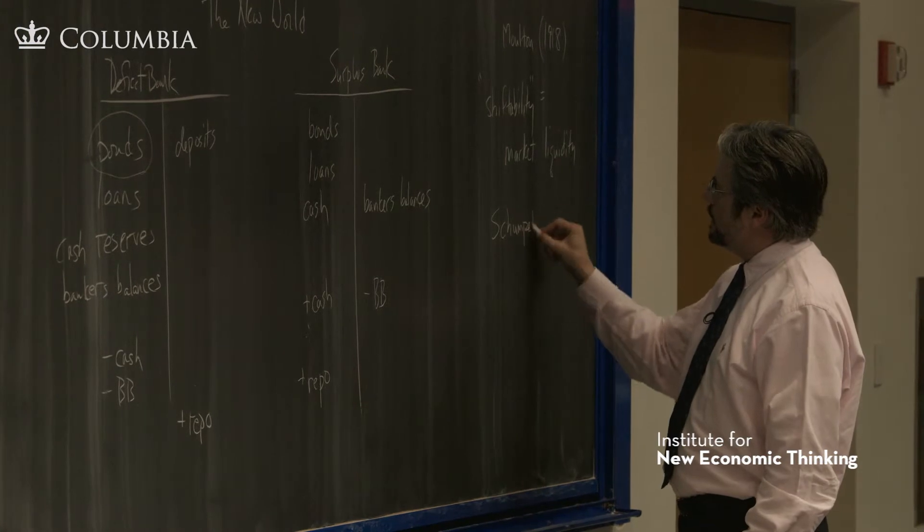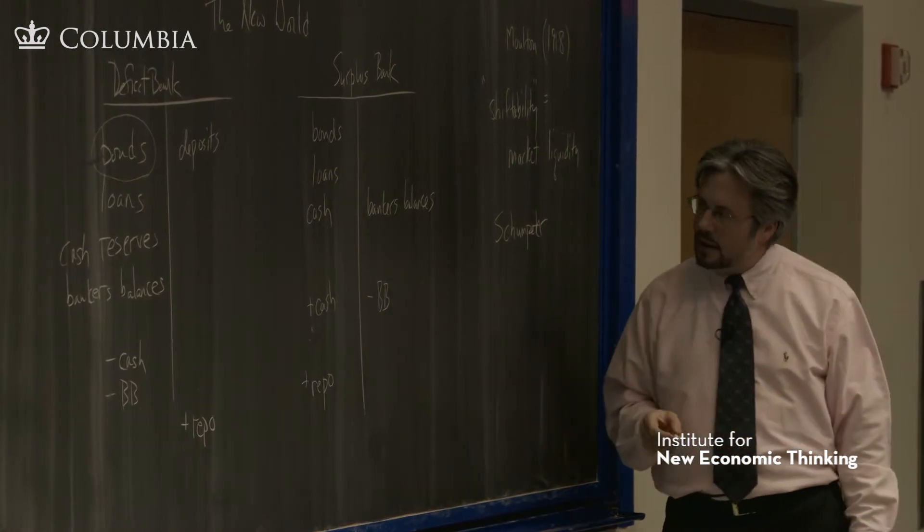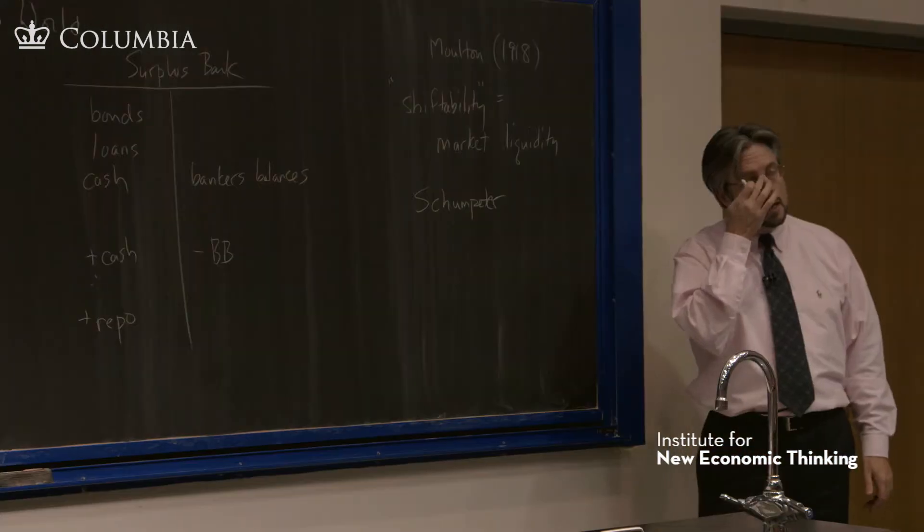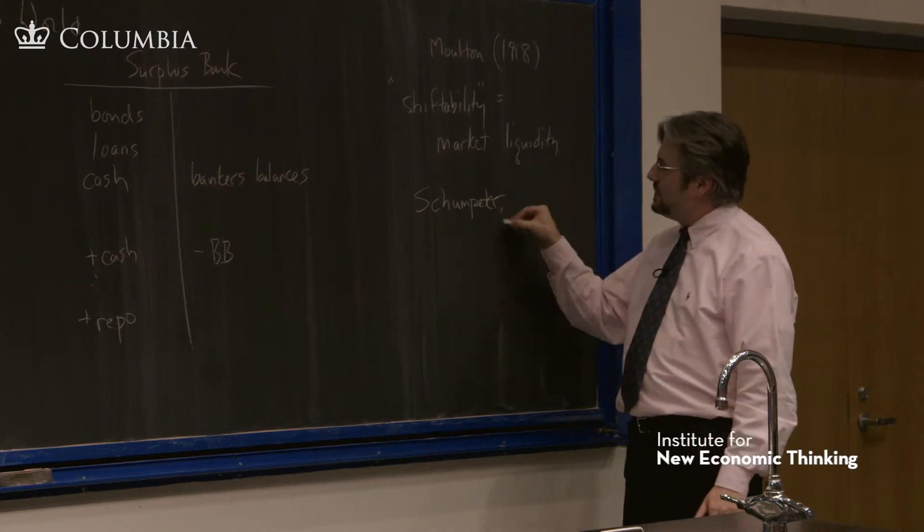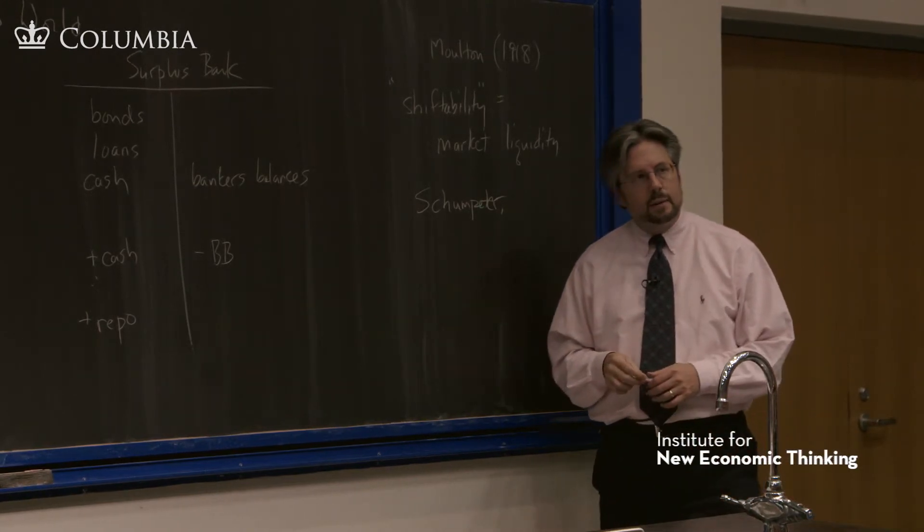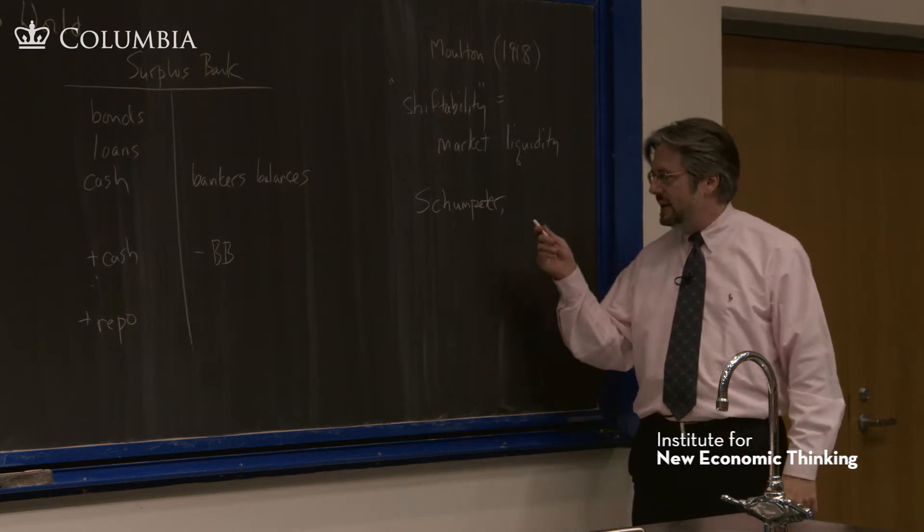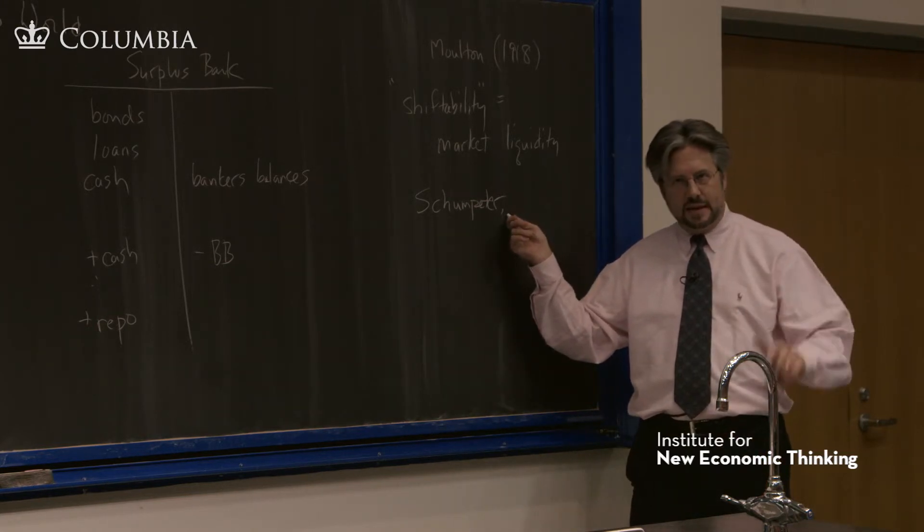Joseph Schumpeter wrote his thesis in 1912 and he emphasized the importance of banking for economic development. And this was an idée fixe for him for the rest of his life.